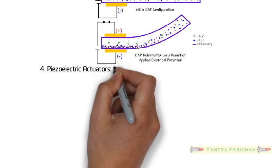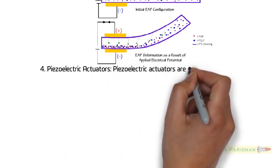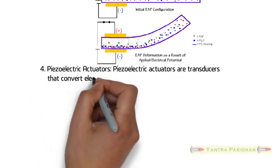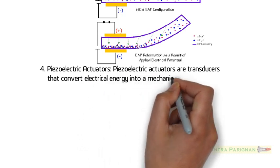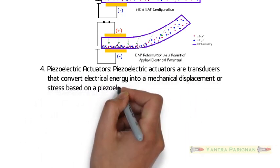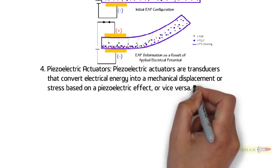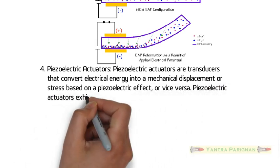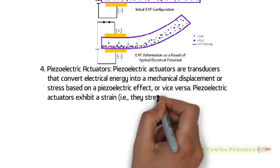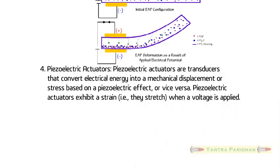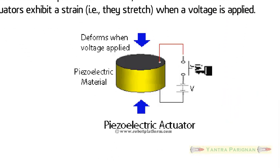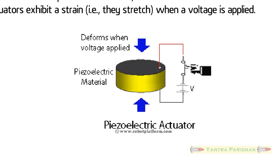Piezoelectric Actuators are transducers that convert electrical energy into a mechanical displacement or stress based on a piezoelectric effect, or vice versa. Piezoelectric actuators exhibit a strain, that means they stretch when a voltage is applied. These actuators are capable of extremely precise motions, typically measured in nanometers. A small animation shows the principle of piezoelectric actuator. Here piezoelectric material is deforming continuously upon the application of electrical potential.